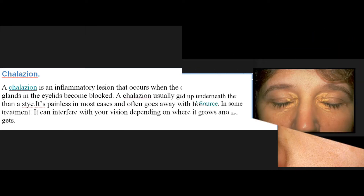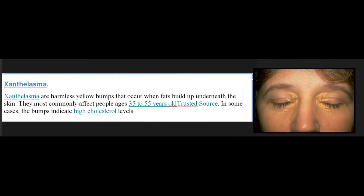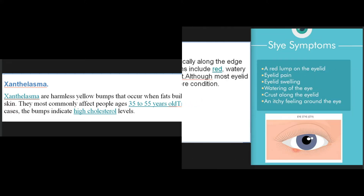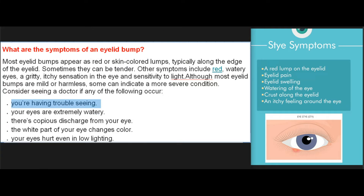Xanthelasma: Xanthelasma are harmless yellow bumps that occur when fats build up underneath the skin. They most commonly affect people ages 35 to 55 years old. In some cases, the bumps indicate high cholesterol levels. Most eyelid bumps appear as red or skin-colored lumps, typically along the edge of the eyelid, and sometimes they can be tender.